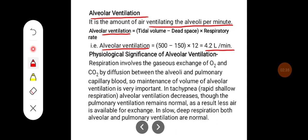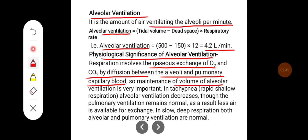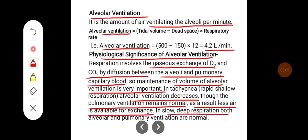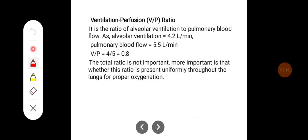The physiological significance of alveolar ventilation: respiration involves gaseous exchange of oxygen and carbon dioxide by diffusion between the alveolar and pulmonary capillary blood, so maintenance of alveolar ventilation volume is very important. In tachypnea — rapid shallow respiration — alveolar ventilation decreases though pulmonary ventilation remains normal, so less air is available for exchange. In slow deep respiration, both alveolar and pulmonary ventilation are normal.